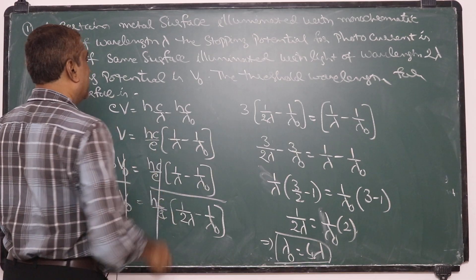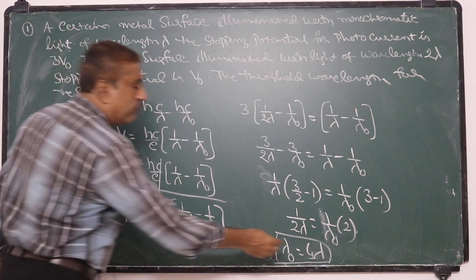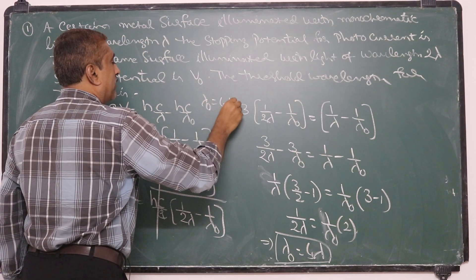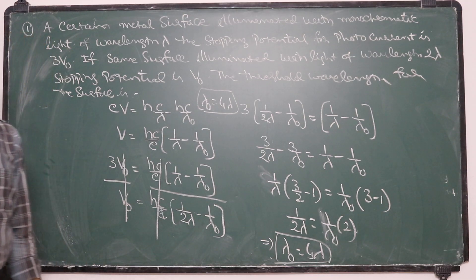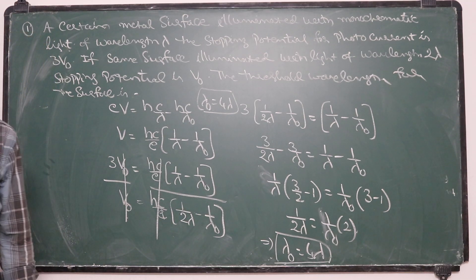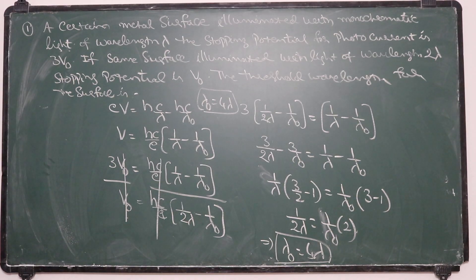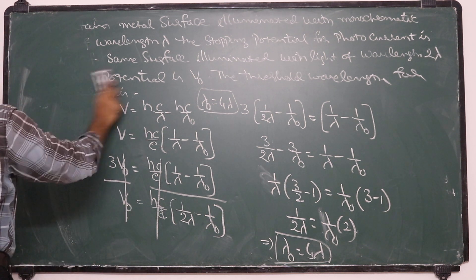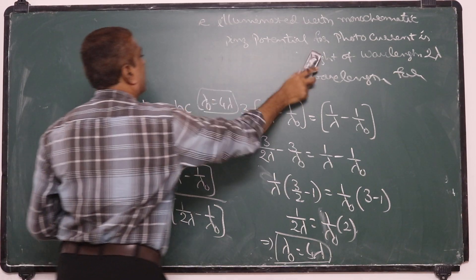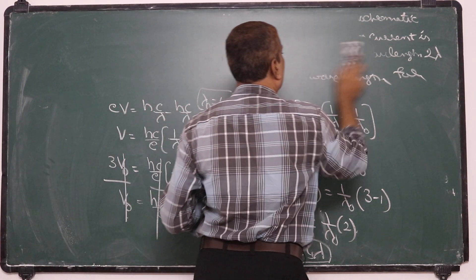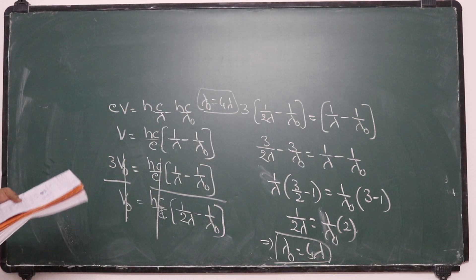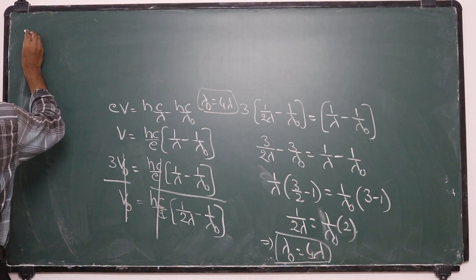The threshold wavelength for that surface is 4 times the wavelength λ, so λ₀ = 4λ.